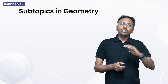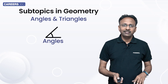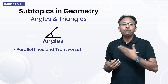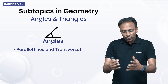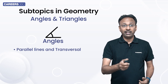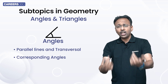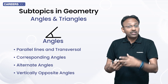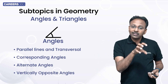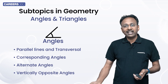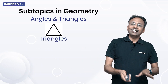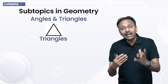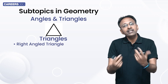Let's look in more detail at the subtopics in geometry. First is angles and triangles. You need to understand parallel lines and transversals — go back to your ninth and tenth class NCERT books. You don't even need any other books. What are corresponding angles? Alternate angles? Vertically opposite angles? These concepts will be utilized in triangles and quadrilaterals specifically. The most important triangle you need to memorize is the right-angled triangle.